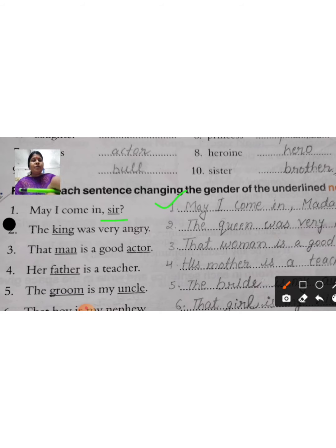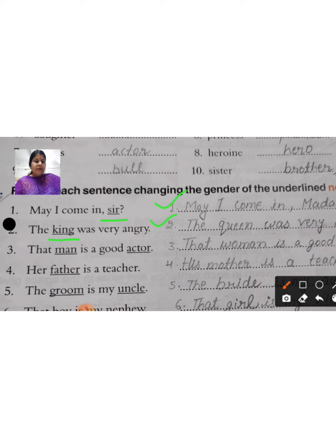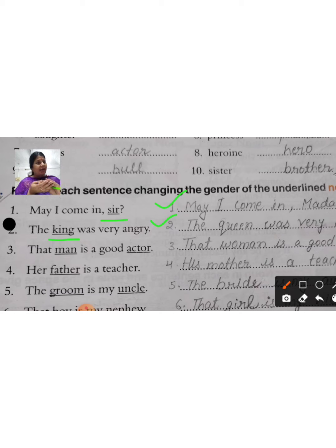Next, sentence two: 'The king was very angry.' King was the raja who was very angry. You have to change the gender of king. King becomes queen — Q-U-E-E-N. So you will write: 'The queen was very angry.' Only the underlined word needs to be changed.